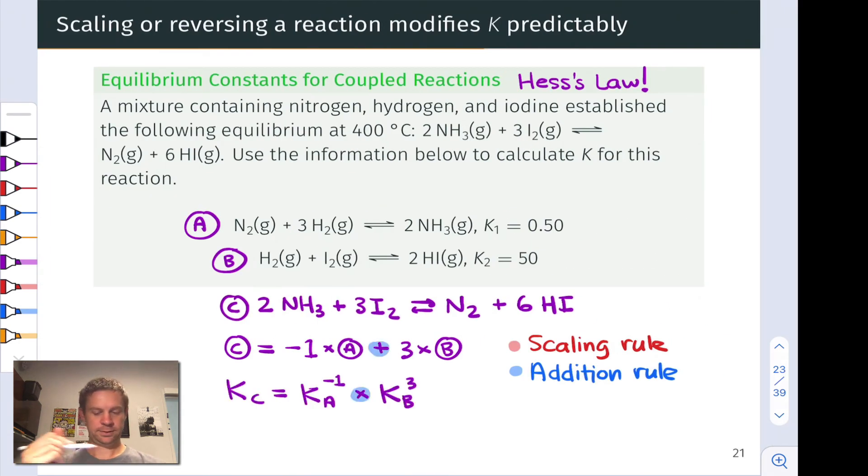So for example, in adding these two reaction quantities, negative 1 times A and 3 times B, we're going to multiply the equilibrium constants. And so Kc is equal to some term involving Ka times some term involving Kb, since we're adding those two terms.